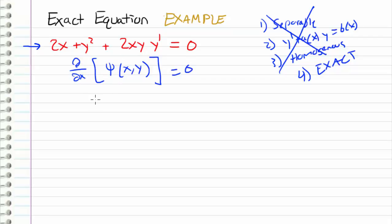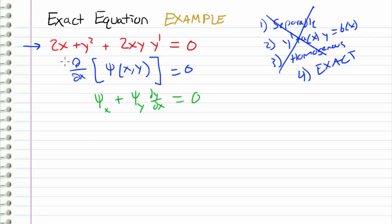So we would have the partial derivative of psi with respect to x, and since psi is also a function of y, and y is a function of x, we also have to add in this component: psi sub y times dy/dx — the chain rule — and that is all equal to zero. Whenever we want to determine whether our differential equation is an exact equation, we test if it fits this form.